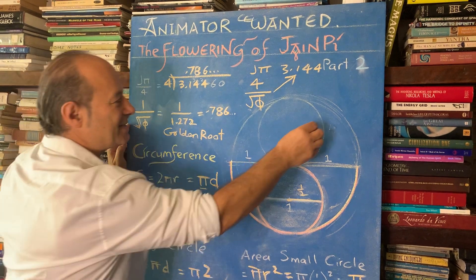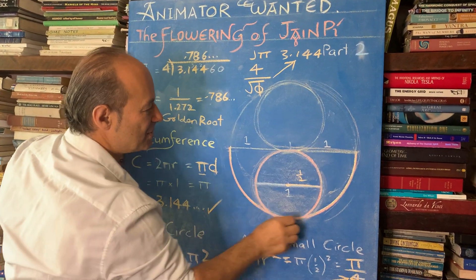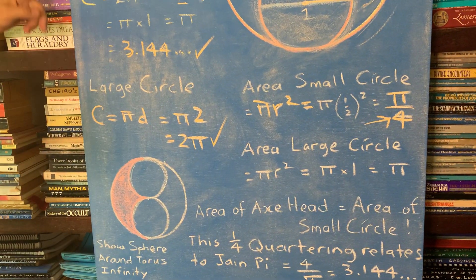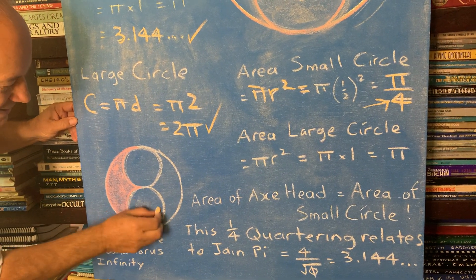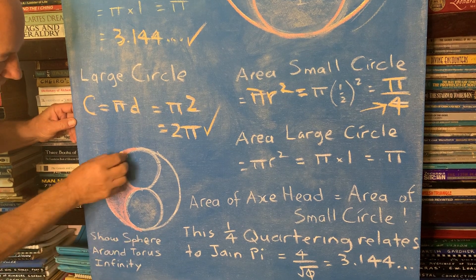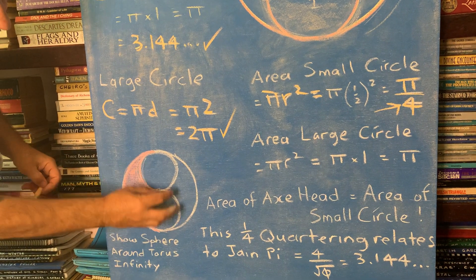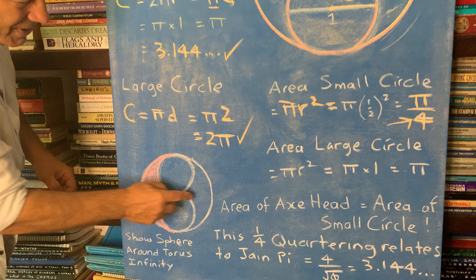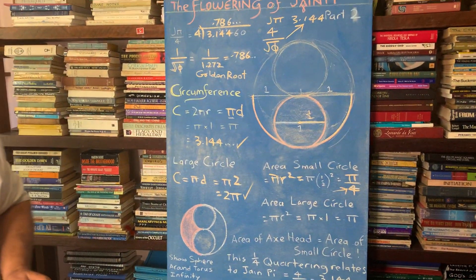Now, we've just worked out that this is the yin yang symbol. If you draw another circle here, this is your traditional yin yang symbol, which is all based on the golden ratio. And here, this distance here is one, one unit. This axe head here is also the same area as this circle here. So the sum of this figure eight, these two eights, is the same as the sum of these two kind of Viking axe head shapes here.